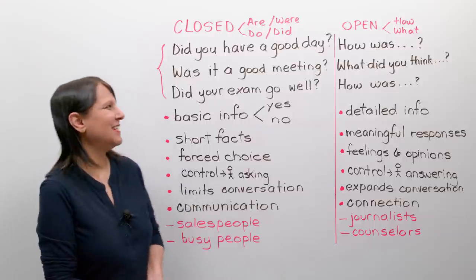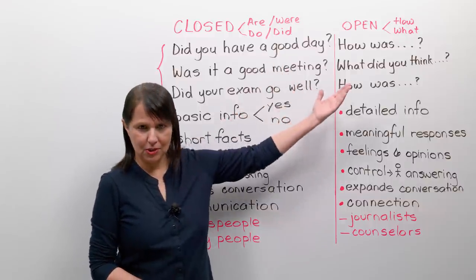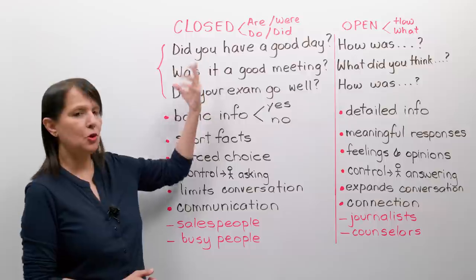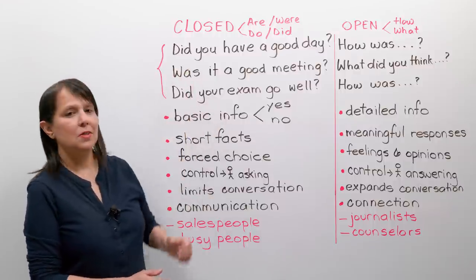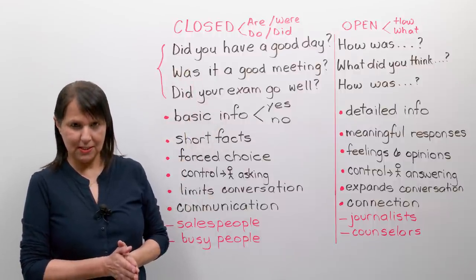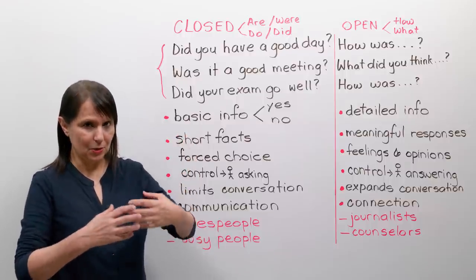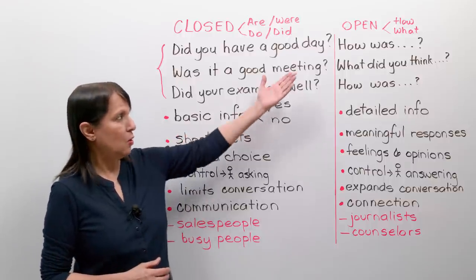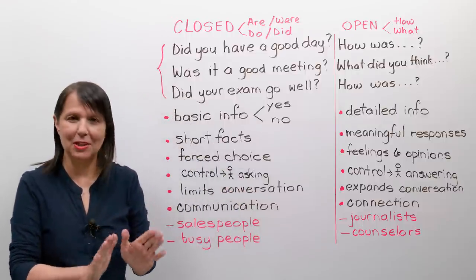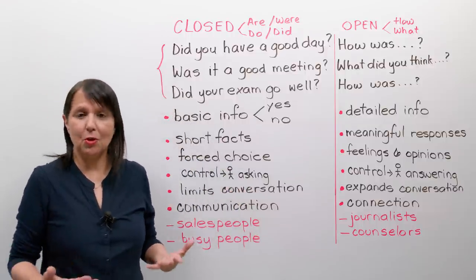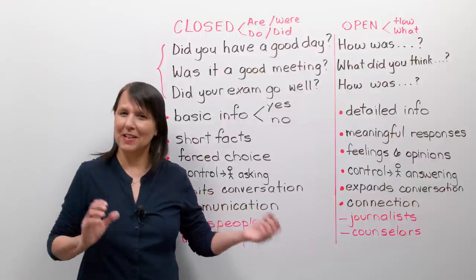The secret is to ask open questions rather than closed questions. Let me explain exactly what each of these are. Closed questions usually start with 'are you,' 'were you,' 'do you,' 'did you.' And open questions start with other words like 'how' and 'what.' Let's look at some examples — you'll understand immediately because you've already used both of these strategies, maybe without realizing what the effect is.